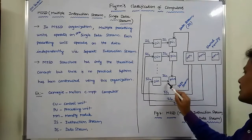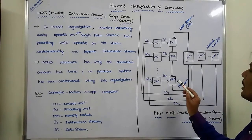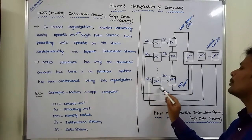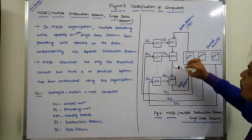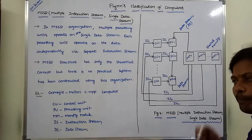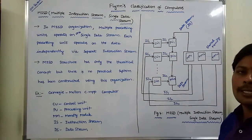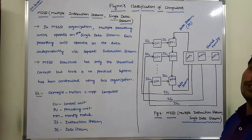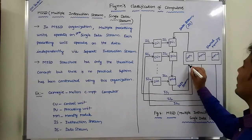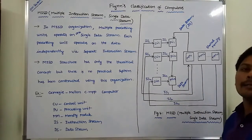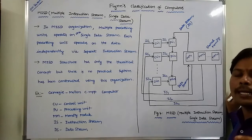The next processing unit is PUN. PUN can execute the instructions sent from its corresponding control unit with the data obtained from the previous processing unit. Whatever output we get is sent forward. The shared memory also provides a data stream. This is the process carried out in the MISD computer.